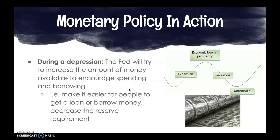The Fed's goal for expansionary policy is to make it easier for people to get a loan — essentially, we want to lower that interest rate, lowering the fee one has to pay to get a loan from a bank. Because if that amount is low, you're going to be more likely to borrow. The Fed will also decrease the reserve requirement, meaning banks don't have to keep as much on hand. For example, if the Fed normally requires a bank to keep $10,000 on reserve, during a depression it might decrease that to $8,000 — giving the bank $2,000 more to loan out, putting more money into the economy.